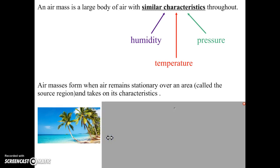For example, if an air mass were to hang out over a tropical beach, it would become warm and it would become humid because of the warm water.